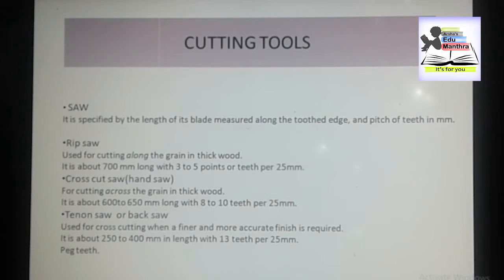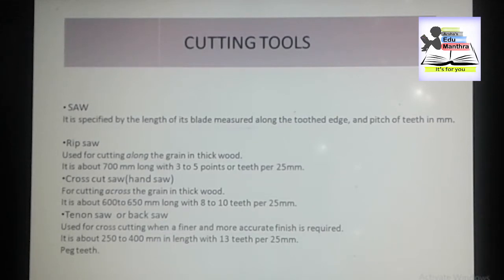Let us start with the rip saw. Rip saws are used for cutting along the grain in thick wood. Remember — for cutting along the grain. The blade is made of high grade tool steel and may be either straight or skewed back.